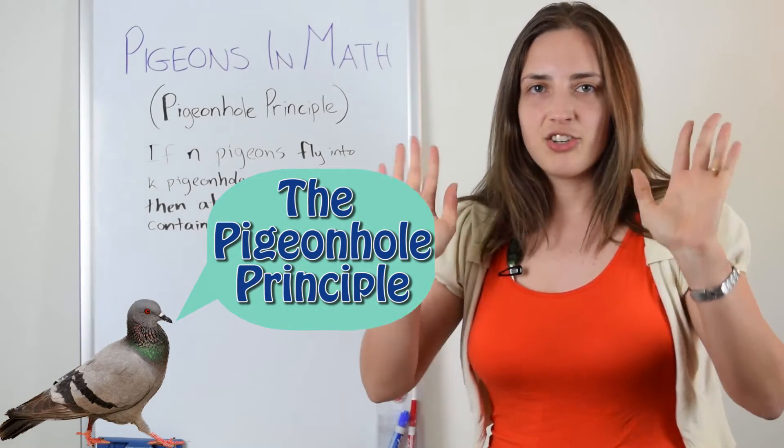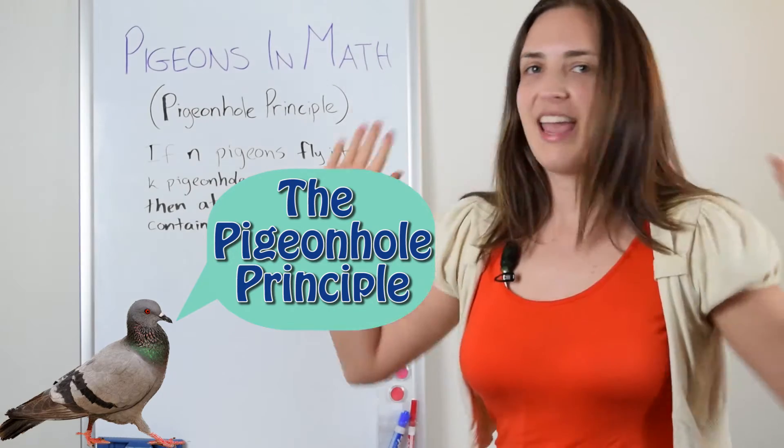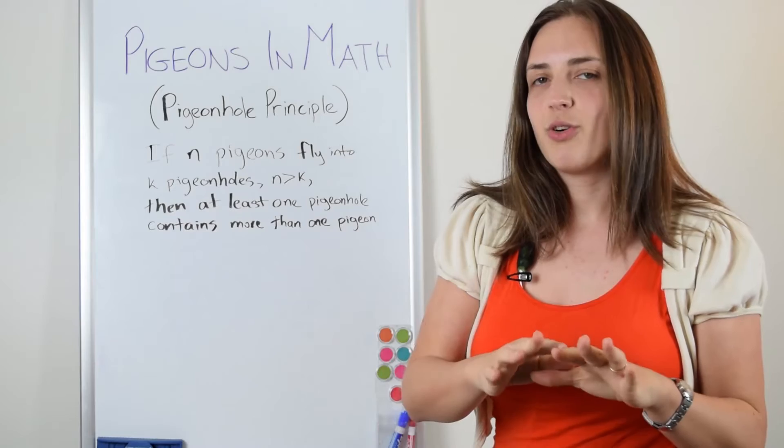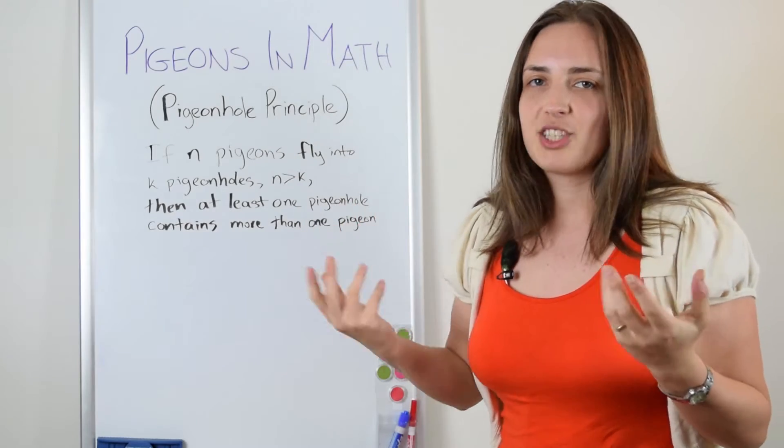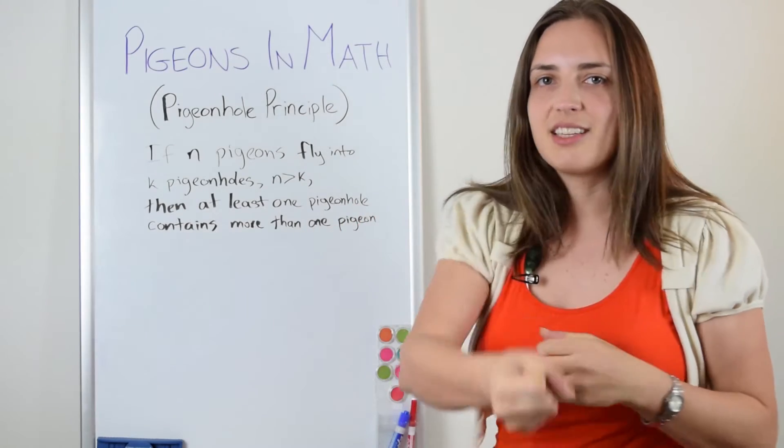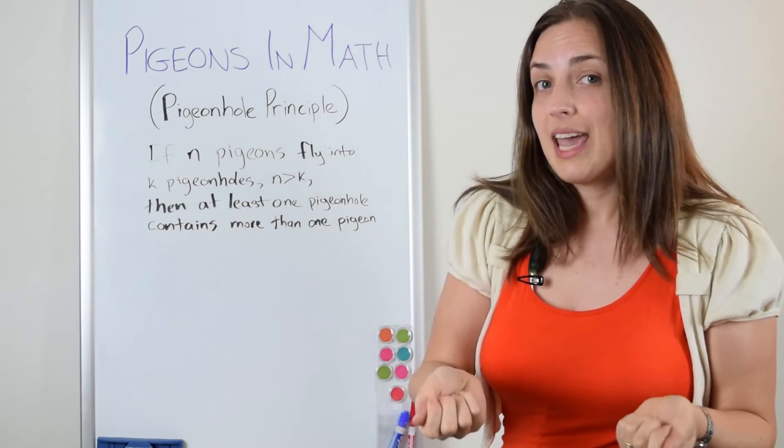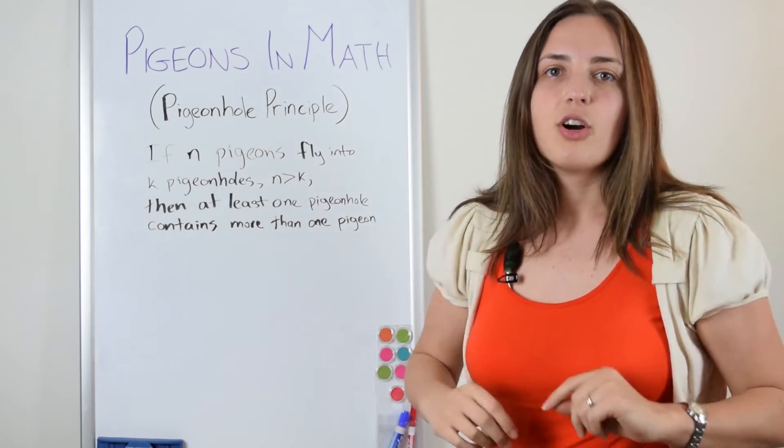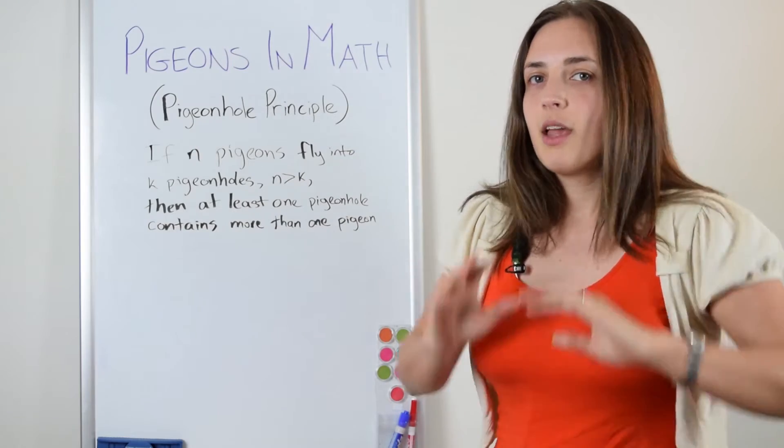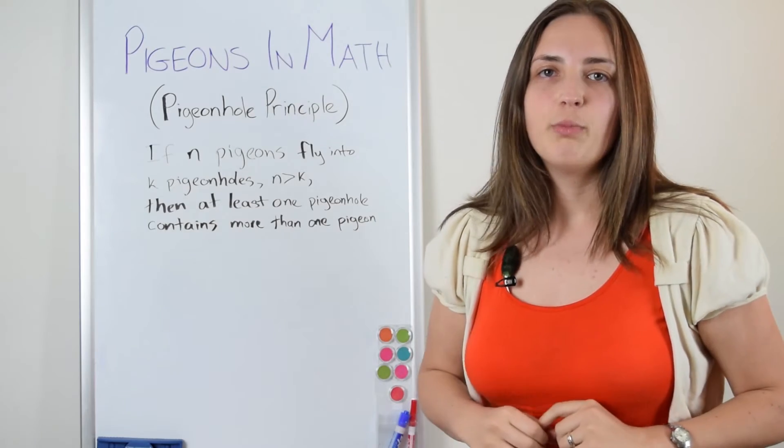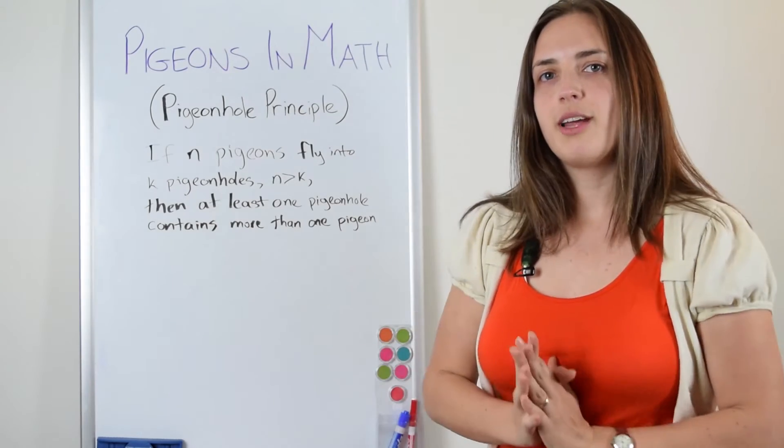It says that if we have n pigeons, and don't worry, I don't have three anymore, I have n, any number of pigeons, and I have k pigeonholes, and you can talk about pigeons flying into the pigeonholes or placing them in, that doesn't matter. You have n pigeons going into k pigeonholes, and you also know that n is bigger than k. Then you can conclude that there will be a pigeonhole that contains at least two pigeons. Really straightforward, right?